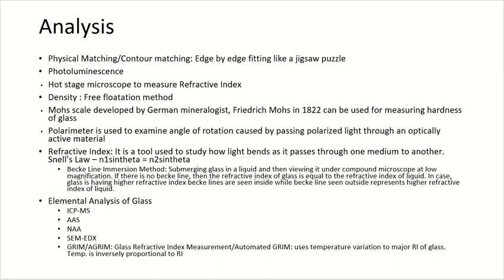Another method to determine the refractive index of glass is the beaker line method, in which the glass particle is placed in a liquid. If the liquid and the glass particle have the same refractive index, the glass particle will seem to disappear. If the beaker line is inside the glass particle, it represents that the refractive index of glass is more than that of the liquid. If the beaker line is outside the glass particle, it represents that the refractive index of the liquid is more than that of the glass particle. When there is no beaker line, the refractive index of both glass and liquid is the same.